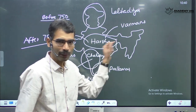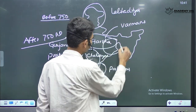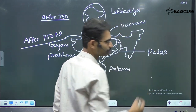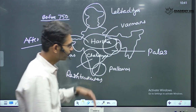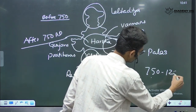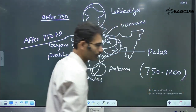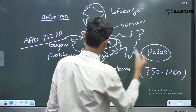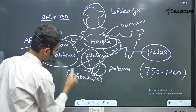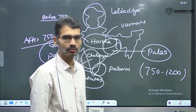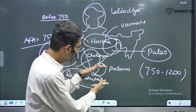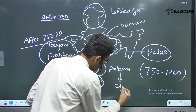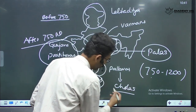With respect to the Bengal region, powerful dynasties emerged — they are the Palas. So from 750 to 1200, the important powerful dynasties were Palas, Gurjara Pratiharas, Rashtrakotas. And when it comes to the deep south, Cholas are going to emerge as the more powerful one.